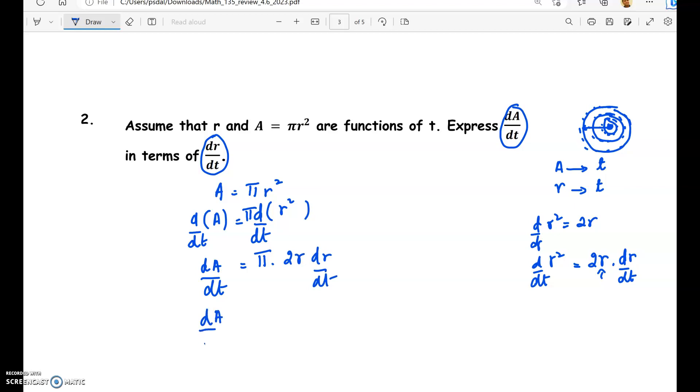So dA by dt is equal to 2 pi r dr by dt. So suppose we are given the rate of change of radius with respect to t, let us say it is 2.5 inches per second.